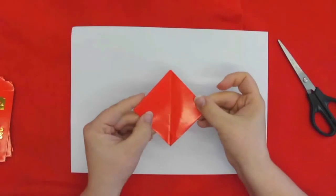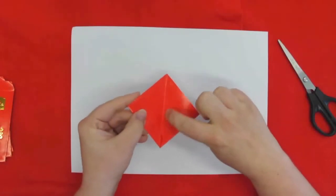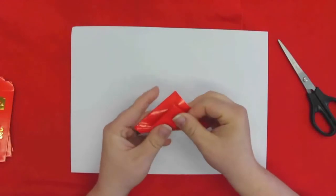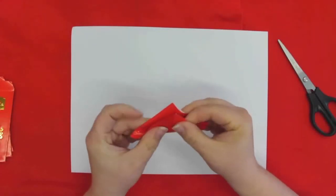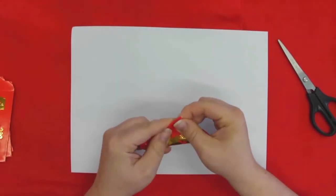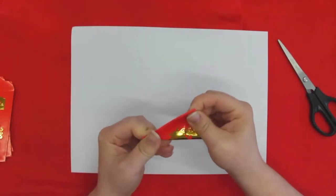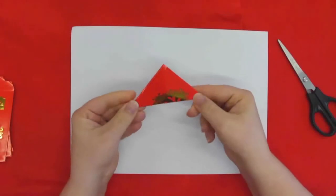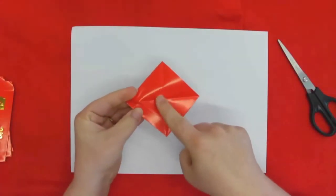So unfold it and now the line in the middle between those two corners, bring those corners together so you're creating a triangle in the opposite direction. Again, fold it down, get a good crease.